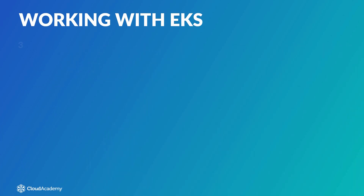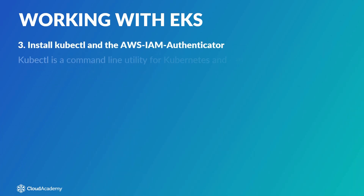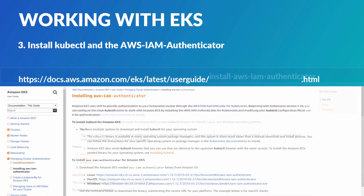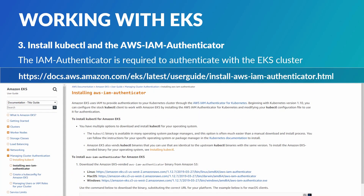Thirdly, you need to install kubectl and the AWS IAM Authenticator. kubectl is a command line utility for Kubernetes and can be installed following the details provided. The IAM Authenticator is required to authenticate with the EKS cluster, and depending on your client OS — Linux, Mac OS or Windows — it can be downloaded using the links on screen.